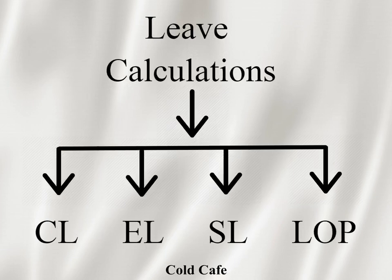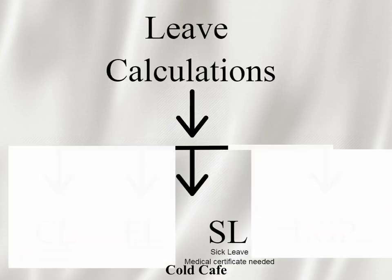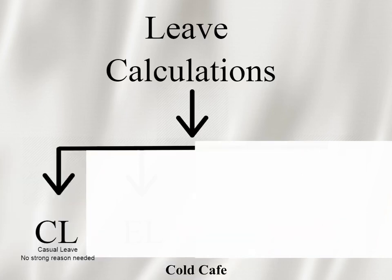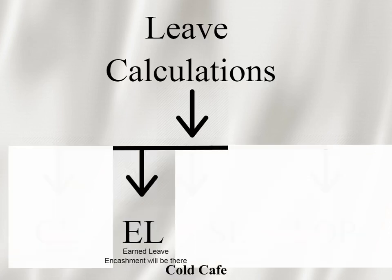We are going to look at how we consider leave. The first type is sick leave — for example, if I took leave for any medical purpose and while returning to the job I give my sick leave letter with a medical acknowledgement, my leave would be considered as sick leave. The next type is casual leave, which the company considers for normal or usual reasons like family purposes, not for strong medical reasons.